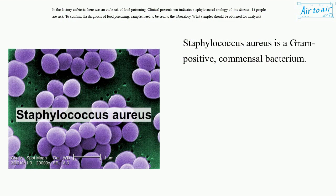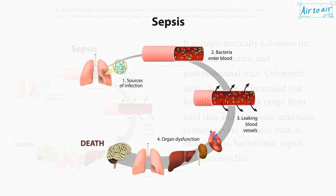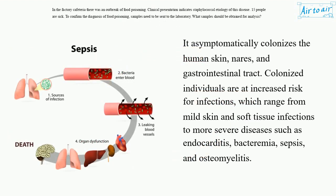Staphylococcus aureus is a gram-positive commensal bacterium. It asymptomatically colonizes the human skin, nares, and gastrointestinal tract. Colonized individuals are at increased risk for infections, which range from mild skin and soft tissue infections to more severe diseases such as endocarditis, bacteremia, sepsis, and osteomyelitis.